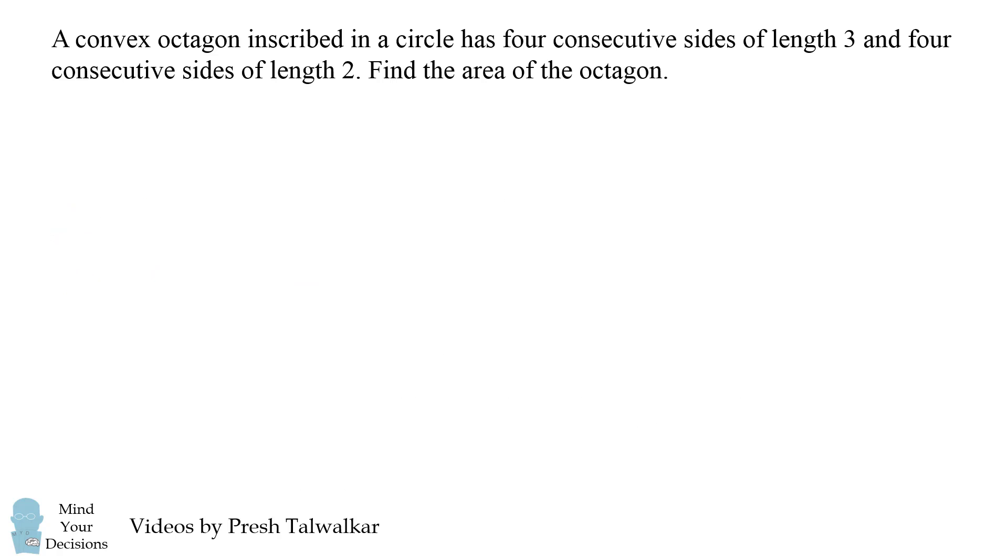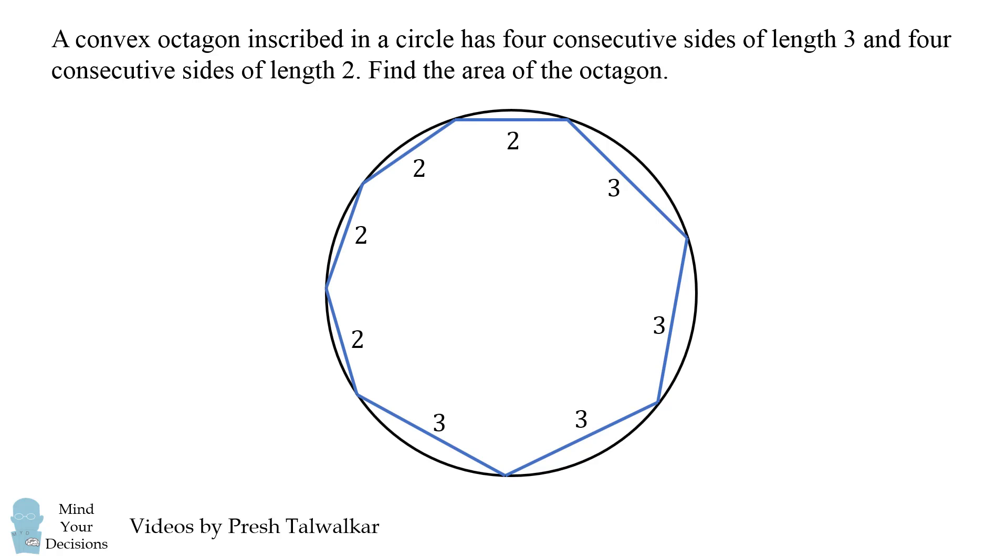So let's get started by sketching the shape. We have a circle, and then we have four consecutive sides of length 3 and four consecutive sides of length 2. I'll admit, this is about as far as I got with this problem, because I could not figure out a way to deconstruct the shape into areas that I could solve.